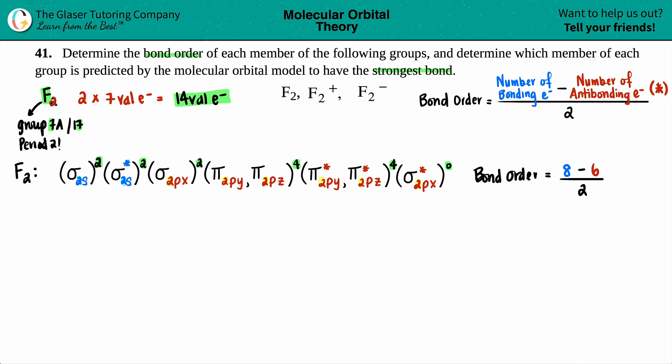There you go. So 8. And now we're just going to do the math. Maybe I'll just pull this over a little bit. Because for this one, 8 minus 6 is 2. 2 divided by 2 is a bond order of 1. So we have our first bond order answer.